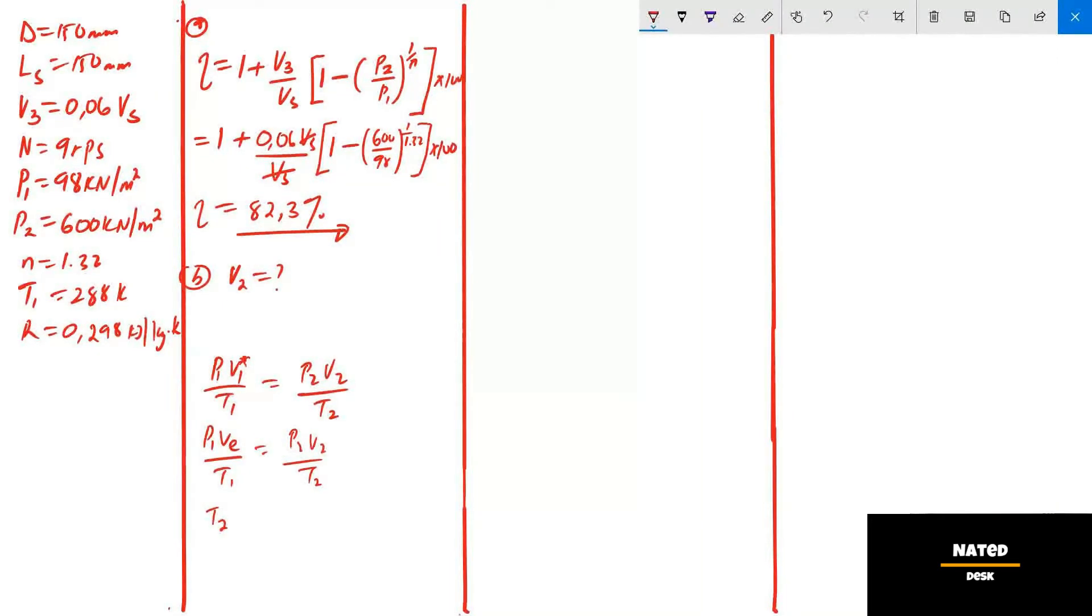From the information we don't have T2 and VE, so let's calculate T2 first using the temperature ratio and pressure ratio to the power N minus 1 divide by N. We have all the information here, so we can substitute the values and calculate T2. T2 equals 446.85 Kelvin.